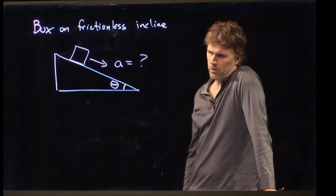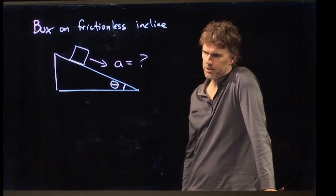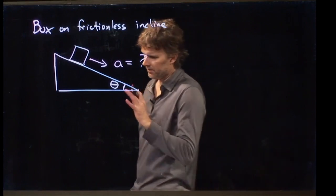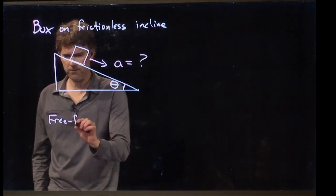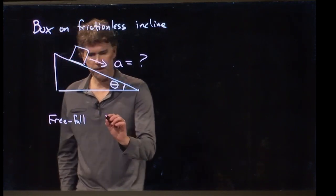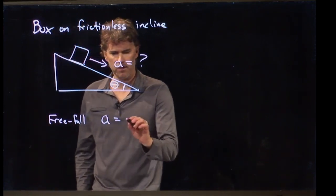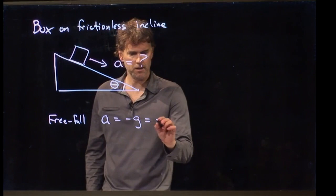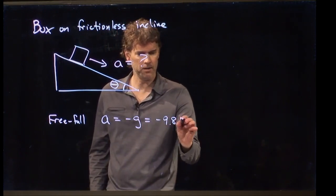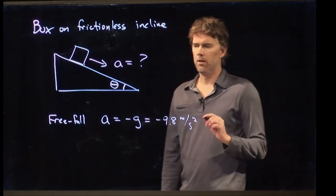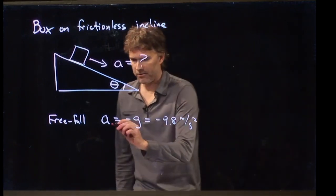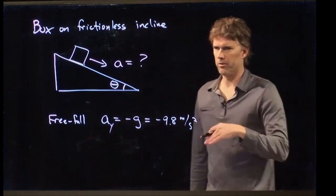Now, we need to figure out what this acceleration is down the incline. So what do we know about acceleration? What we know is that if something falls straight down, then the acceleration is negative g, negative 9.8 meters per second squared. And that would be a sub y if we're talking about the vertical direction.